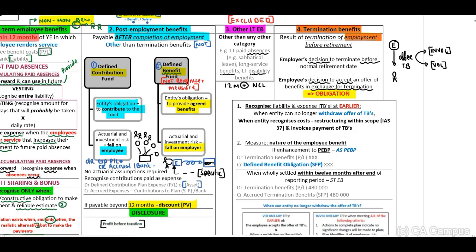We may only recognize the liability and expense at the earlier of: one, when the entity can no longer withdraw the offer of termination benefits; or two, when the entity recognizes cost relating to restructuring within the scope of IAS 37 and invoices were paid.